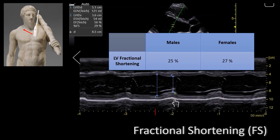Let's go back to our patient and see the numbers that we got. The left ventricular internal diameter at diastole was found to be 5.1 centimeters. The left ventricular internal diameter at the end of systole is 3.6 centimeters. By using the equation shown earlier you can calculate the fractional shortening. This ultrasound machine actually calculates it on its own and found it to be 29 percent.